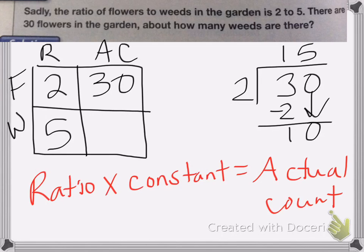That means I can multiply that same constant factor, which is 15. I can multiply my 5 by 15 to figure out my actual count. So let's do that.